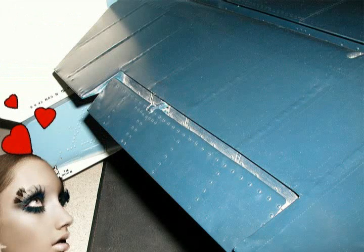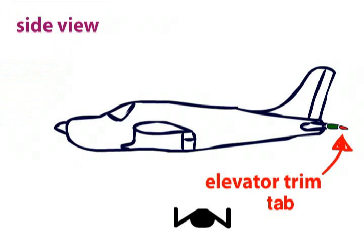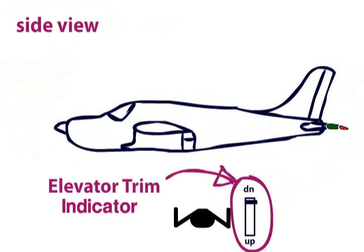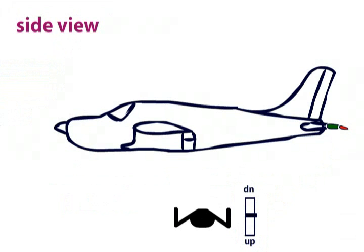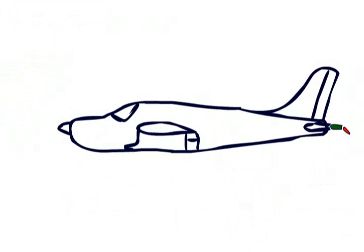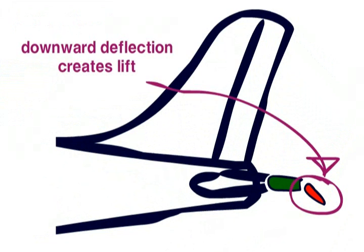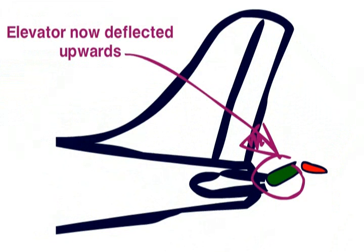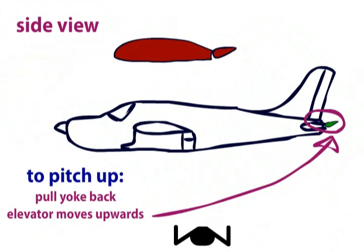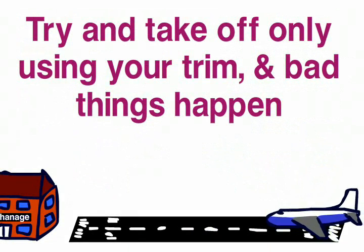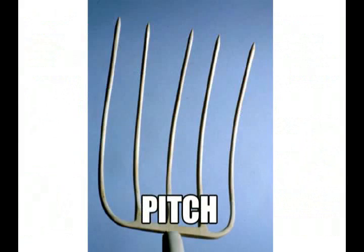The elevator trim tab is attached to the trailing edge of the elevator. This smaller control surface is controlled in the cockpit and it can move independently of the elevator. To trim the aircraft nose up, you would operate the trim control, and this would move the trim tab downwards on the elevator. When a control surface is deflected downwards, it increases lift. The trim tab creating lift will then drag the elevator upwards, and we know from episode 5 that the nose will rise. It is worth noting that trim is not used to control the aircraft, merely to take pressure from the yoke once you have established the airspeed and attitude you want. You can remember this as pitch, power, trim.